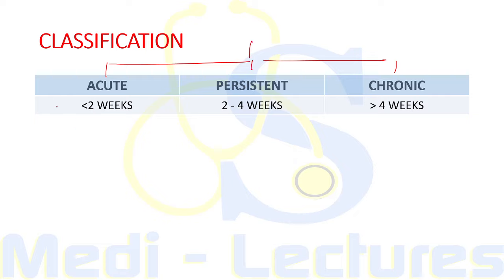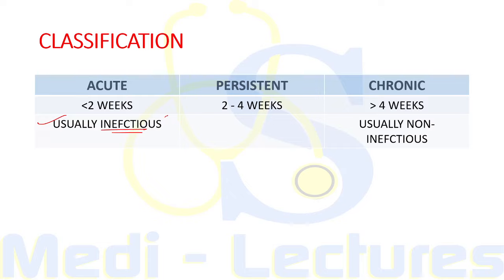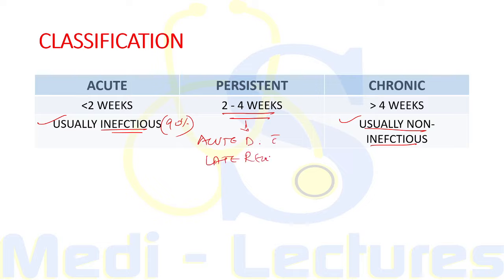Diarrhea is classified into acute, persistent, and chronic depending on duration. Acute is present for less than two weeks, persistent is two to four weeks, and chronic is more than four weeks. Acute diarrhea is usually infectious — about 90 percent of cases — but can also be non-infectious. Most chronic diarrhea cases are non-infectious. The persistent term is used for acute diarrhea with late recovery.